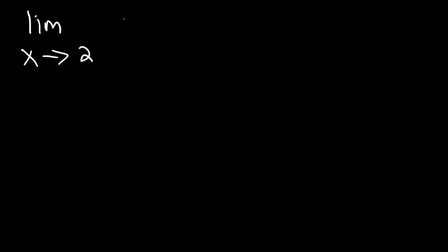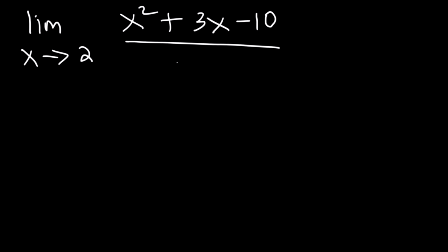Now what about this one: what is the limit as x approaches 2 of x squared plus 3x minus 10 divided by x minus 2? We can't plug in 2 because we'd get 0 in the denominator, which is undefined. So we need to factor. To factor this trinomial, find two numbers that multiply to 10 but add to 3.